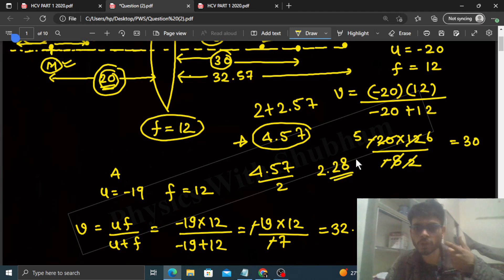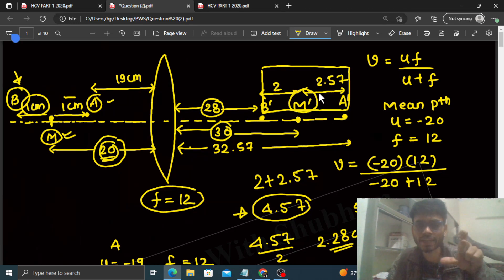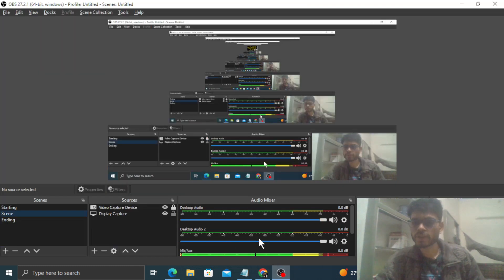So 2.28 centimeter, that is the amplitude of oscillation of the image. Is this SHM? Is the image performing SHM? No, because the mean position is not at the center. The amplitude on one side is 2 and on the other side is 2.57. But anyway you can tell the mean amplitude. So I think you have understood. Keep working hard, best of luck, bye.